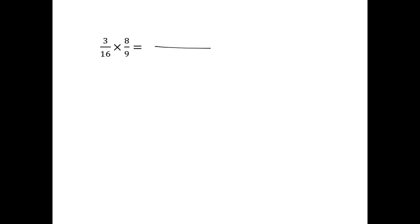We're going to start with multiplication, because that's really easy. If you multiply two fractions together, you multiply the numerators and you multiply the denominators. You can go ahead and say 3 times 8 is 24, and work out 16 times 9 — if you work it out, you'll see it's 144.